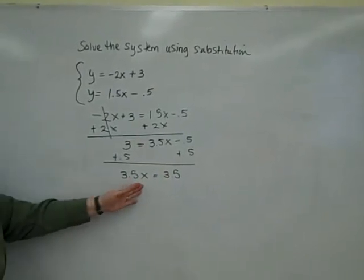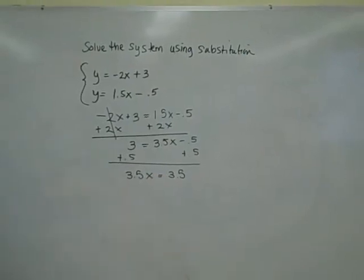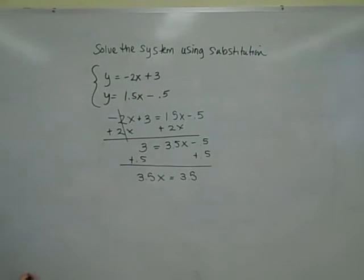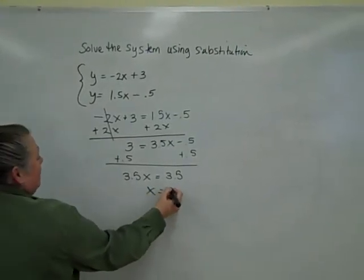And 3 and a half x equals 3 and a half. So 3.5 times some number equals 3.5. That mystery number must be... 1! Great! x equals 1.